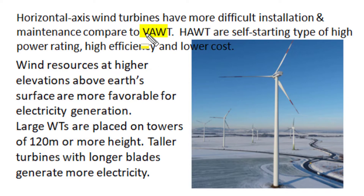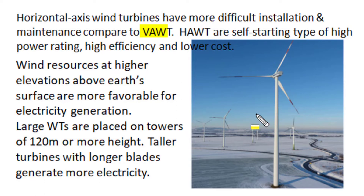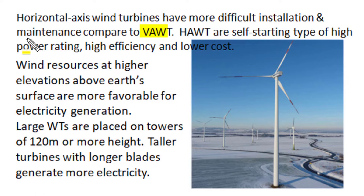Compared to vertical axis wind turbines, horizontal axis wind turbines have more difficult installation and maintenance procedures, but the majority of utility wind turbines are horizontal axis wind turbines. The key reasons for this selection are their higher power rating, very good efficiencies, lower cost, and importantly, they are self-starting.